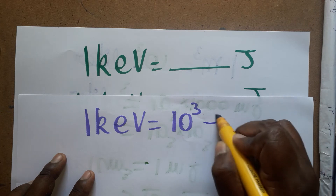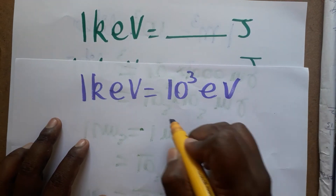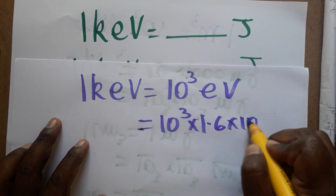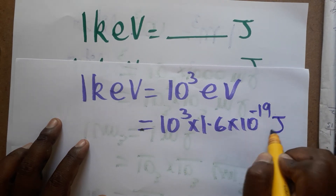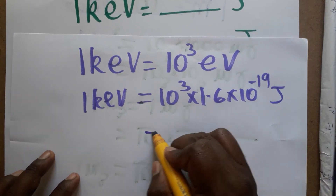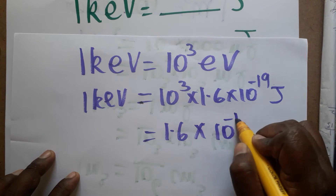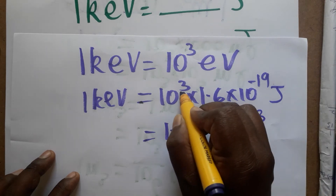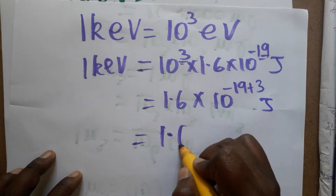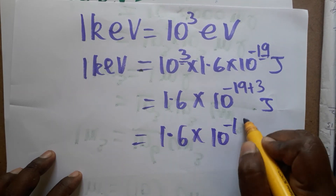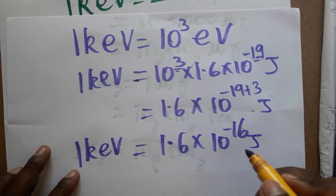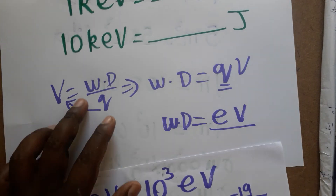The electron represents the charge of the electron, which is 1.6 into 10 to the power minus 19 joules. So 1 kilo electron volt equals 1.6 into 10 to the power (minus 19 plus 3). Adding the powers gives 10 to the power minus 16. Therefore, 1 kilo electron volt equals 1.6 into 10 to the power minus 16 joules.